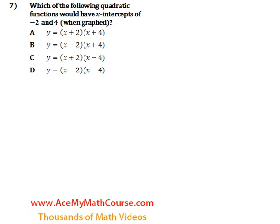Question number 7. Which of the following quadratic functions would have x-intercepts of negative 2 and 4 when graphed? Now the solutions of a quadratic equation are the x-intercepts of its graph.